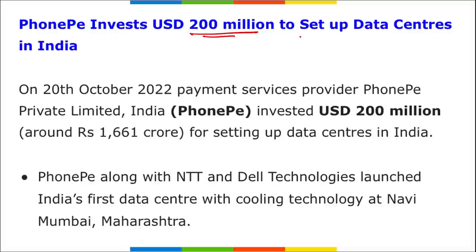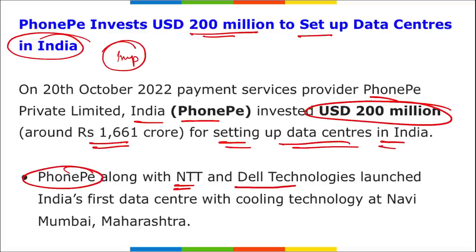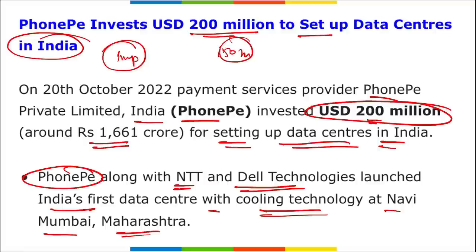PhonePe has invested $200 million, approximately Rs. 1,661 crore, to set up data centres in India. PhonePe, along with NTT and Dell Technologies, launched the first data centre with cooling technology at Navi Mumbai, Maharashtra. Out of the $200 million, PhonePe has already invested $150 million. These investments are under a regulatory mandate on data localisation which prevents financial sector entities from storing data overseas. PhonePe's co-founder and CEO is Sameer Nigam; it is headquartered in Mumbai and was established in 2016.